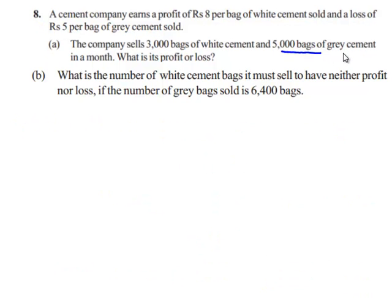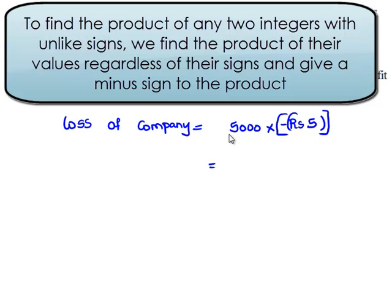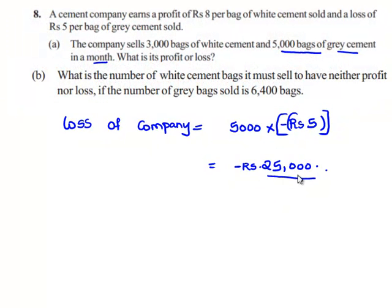The company also sells 5,000 bags of grey cement. Therefore, the loss of the company by selling 5,000 bags of grey cement is equal to 5,000 multiplied by Rs.5. But since it is a loss, we give a negative sign. 5 times 5 gives 25 and we are left with 3 zeros. When we multiply two integers having dissimilar signs, we always get a negative sign in the answer. Therefore, 5,000 multiplied by negative 5 equals negative Rs.25,000. The loss of the company is equals to minus Rs.25,000.